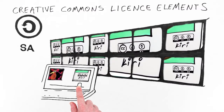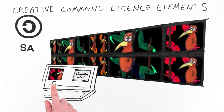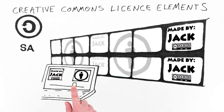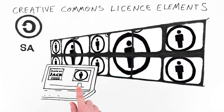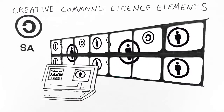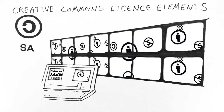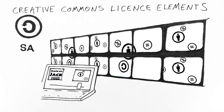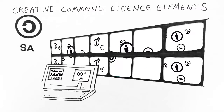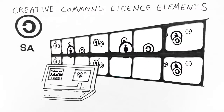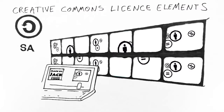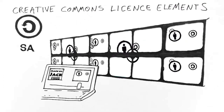Each Creative Commons license gives permission to share and includes the attribution rule. So people who find your Creative Commons licensed work are automatically allowed to share it, but are required to acknowledge you if they do. The other three license elements are optional and you can choose which ones to add, if any.